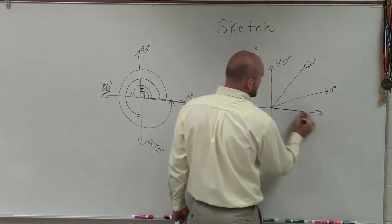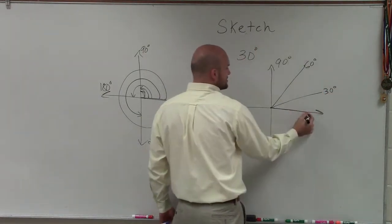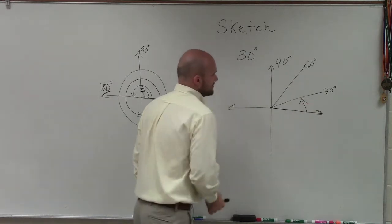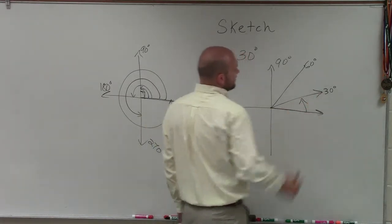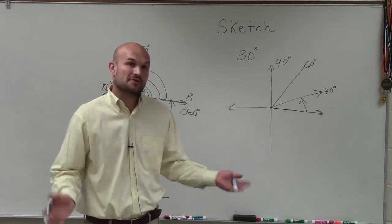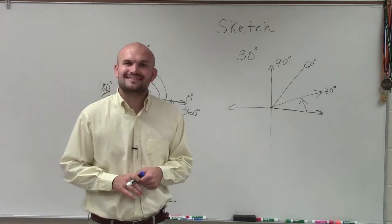So my angle, remember, always starting at our initial side. It's positive, so we're going to go counterclockwise. It's just going to be right there. So that would be my initial side, and that's going to be my terminal side. So there you go, ladies and gentlemen. That is how you sketch the angle of 30 degrees. Thanks.